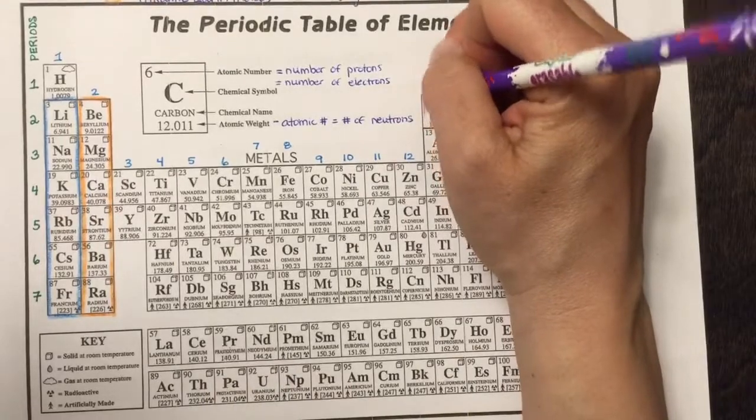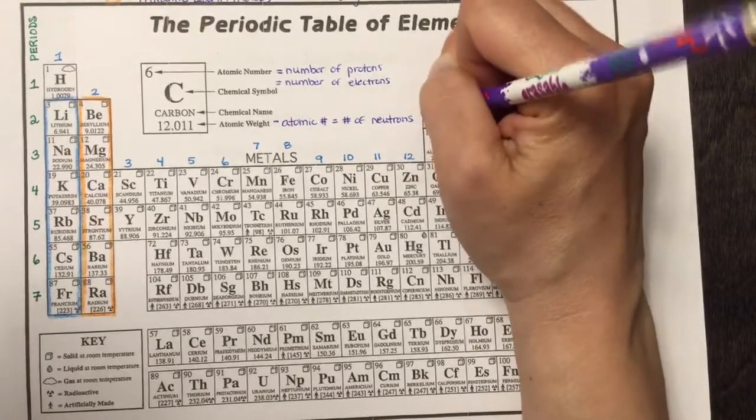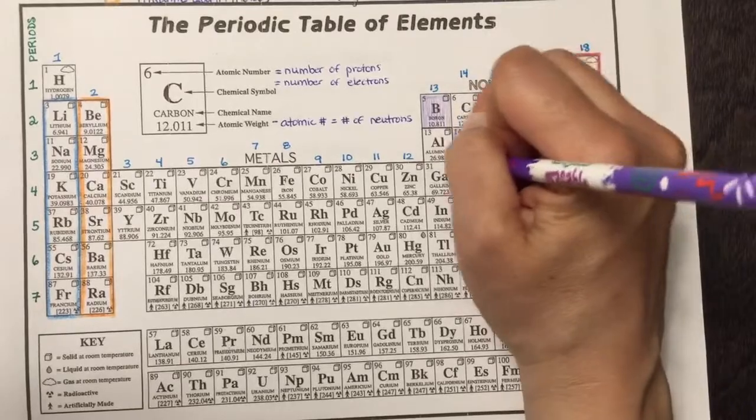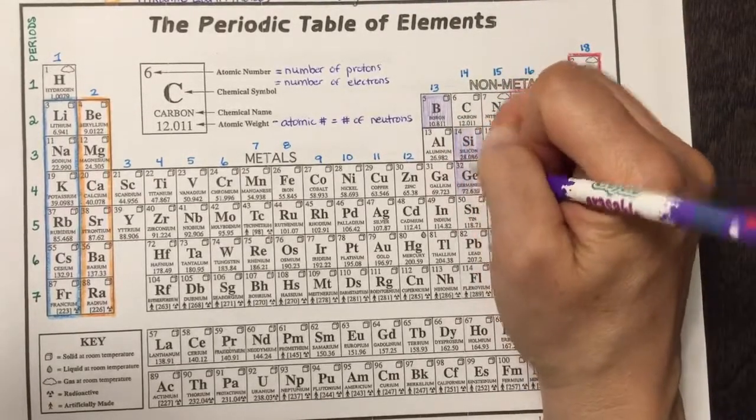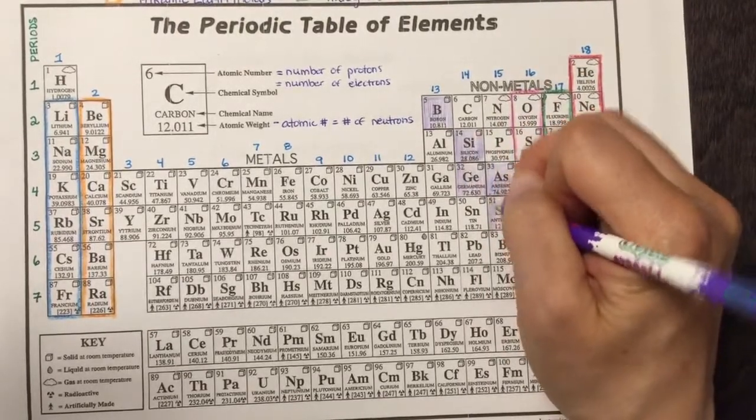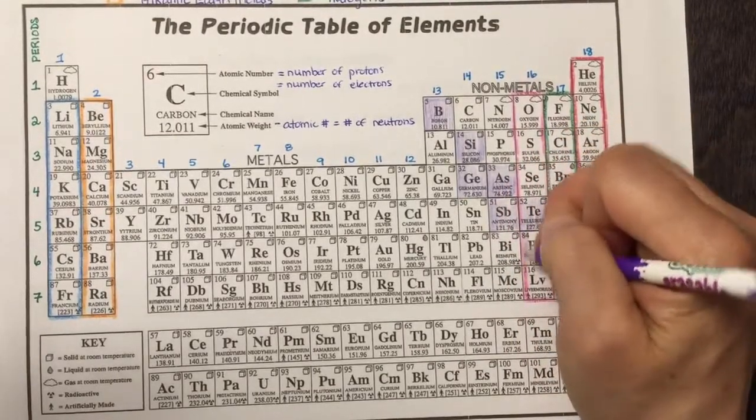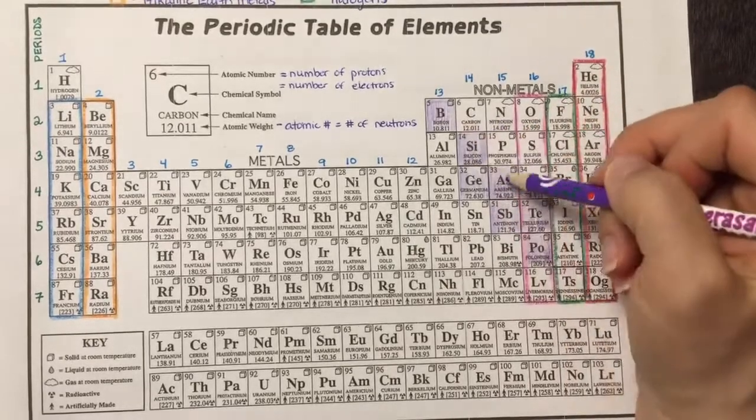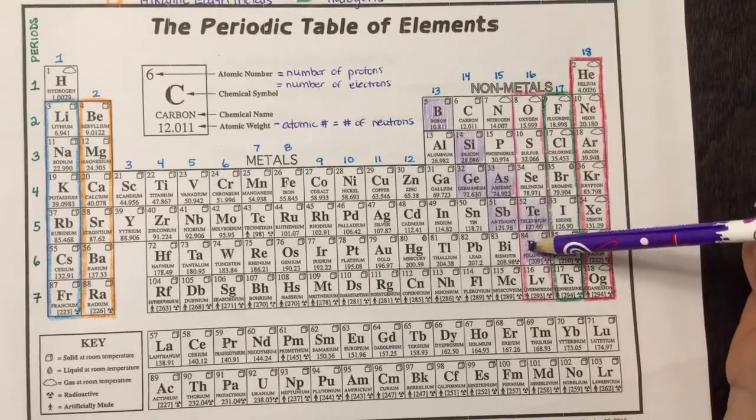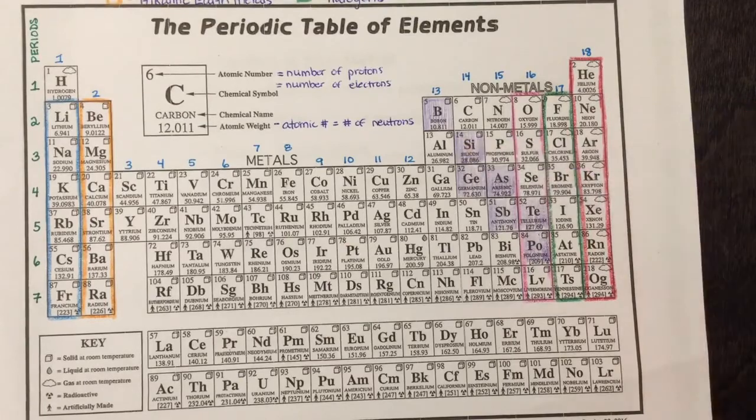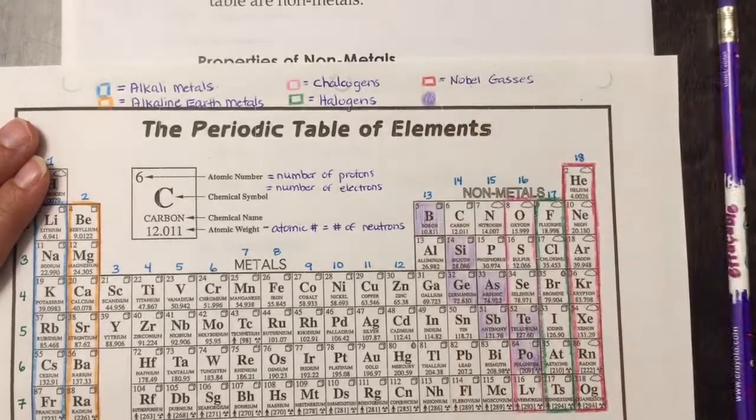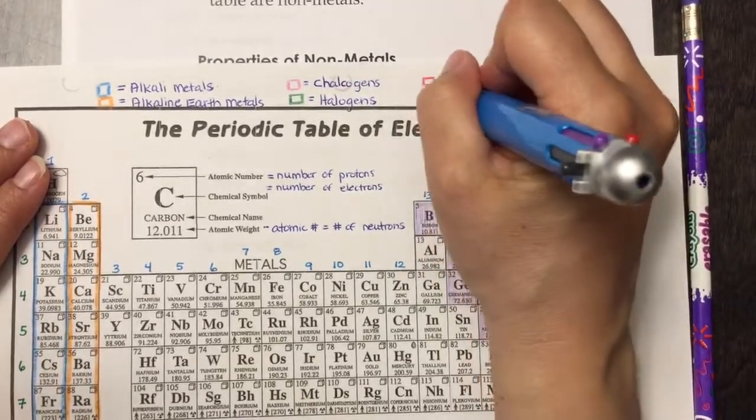I'm going to shade in boron and silicon - and this is why I wanted to wait until the end to shade it, so that we had the metalloids first - and then germanium and arsenic. One, two, three, four, five, six, seven. We don't have to memorize - they're the elements on either side of the staircase up to polonium, but they don't include aluminum. I'm going to add that to my key here. I'm just going to shade in a little bit of purple, and those are my metalloids.